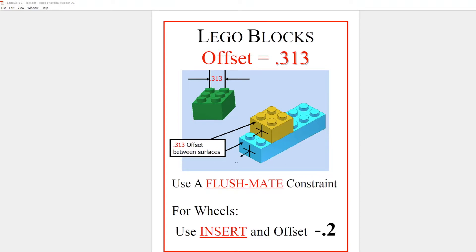We started with a flush mate constraint and then offset back the distance we wanted, 0.313. You also might need to use negative 0.313 to get the Lego to slide in the opposite direction.